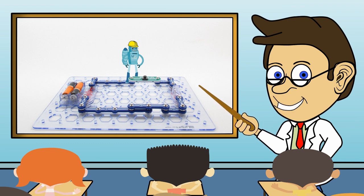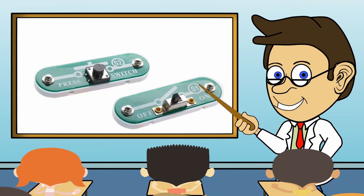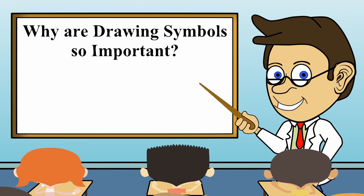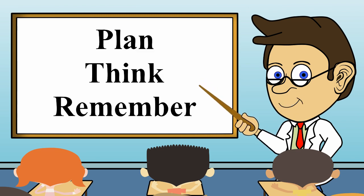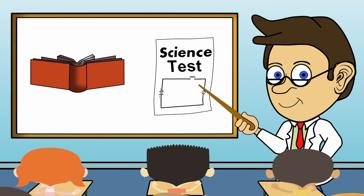Why are drawing symbols so important? They are important for at least two reasons. Number one, drawings help you plan, think, and remember. Number two, circuits cannot be built into the pages of textbooks or test papers, but drawings that represent circuits can. To help understand the importance of drawings and symbols, we need to learn two new words: component and schematic.